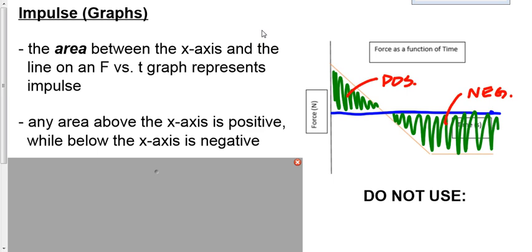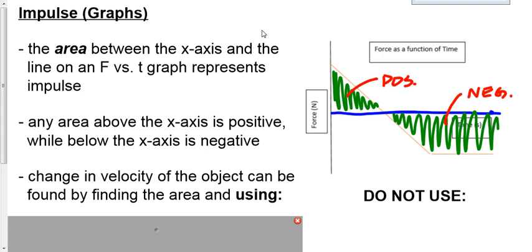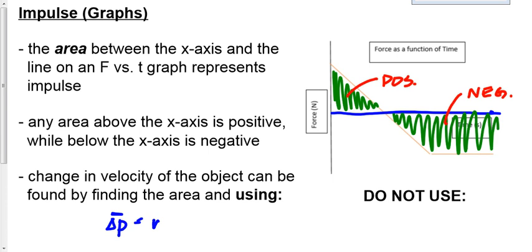Sometimes the question just asks: here's your graph, what's the impulse? Area equals impulse — done. Sometimes it asks for impulse and something else, or doesn't ask for impulse at all. Regardless, you're going to solve for impulse by finding the area. Then, if you need to find something else — like change in velocity or mass — you're going to set the impulse equal to m times delta v.